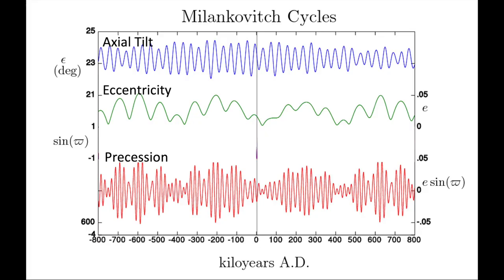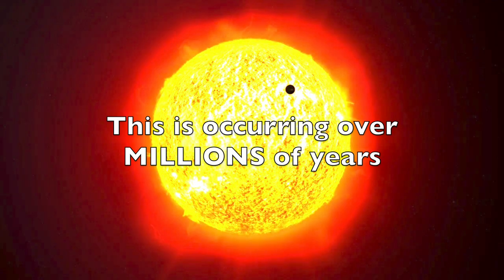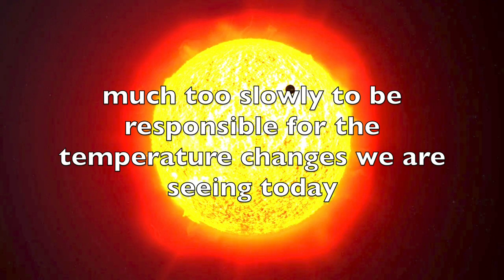In addition to the Milankovitch cycles, one more thing affects the amount of energy we get from the Sun, and that is that the Sun is gradually getting brighter. However, this is occurring over millions of years, much too slowly to be responsible for the temperature changes we are seeing today.